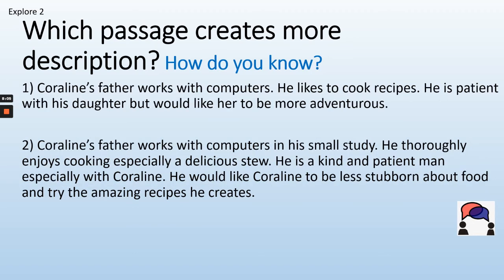Have a look at this one. Passage one: Coraline's father works with computers. He likes to cook recipes. He is patient with his daughter but would like her to become more adventurous. Or passage two: Coraline's father works with computers in his small study. He thoroughly enjoys cooking, especially a delicious stew. He is a kind and patient man, especially with Coraline. He would like Coraline to be less stubborn about food and try the amazing recipes he creates. You should have picked number two — because there are expanded noun phrases and we're learning more about Coraline's father: in his small study, a delicious stew.